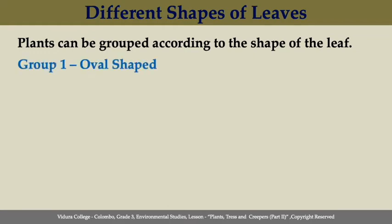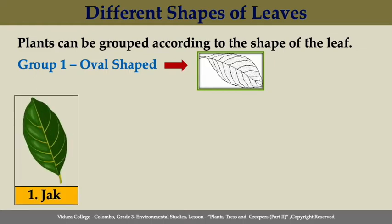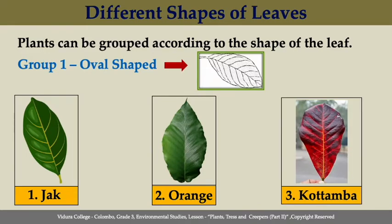The first one is oval-shaped. An oval-shaped leaf has an oval shape. The widest part of the leaf is in the middle. There are many plants with this shape of leaves like jack leaf, orange leaf, and cotomba leaf.